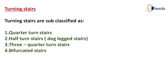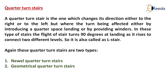Turning stairs are subdivided as quarter turn stairs, half turn stairs (also called dog leg stairs), three-quarter turn stairs, and bifurcated stairs. A quarter turn stair is one which changes its direction either to the right or to the left, the turn being effected either by introducing a quarter space landing or by providing winders. In these types, the flight turns 90 degrees at the landing as it rises to connect two different levels, so it is called an L-stair.